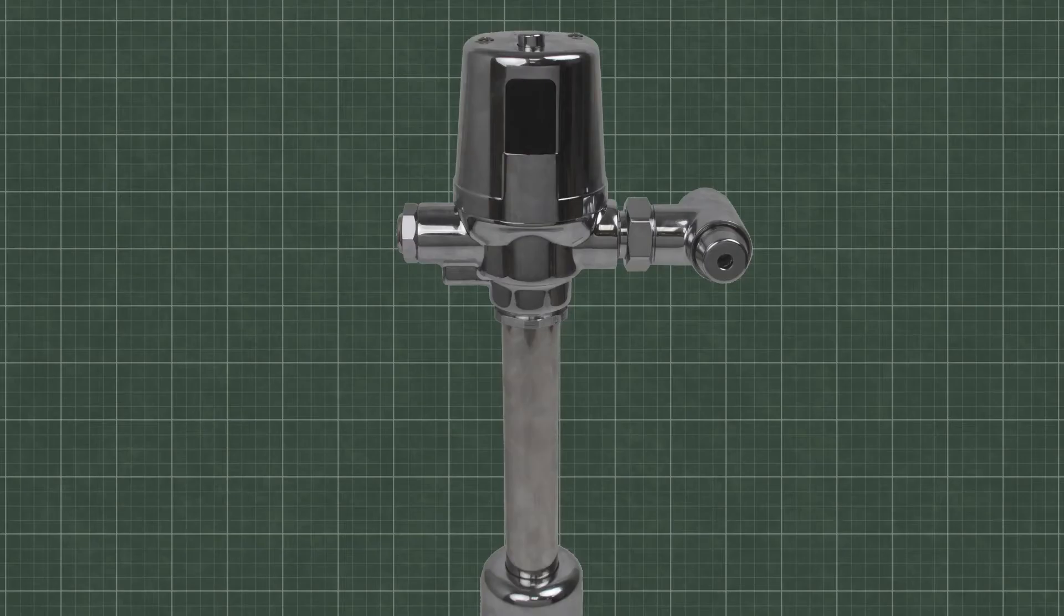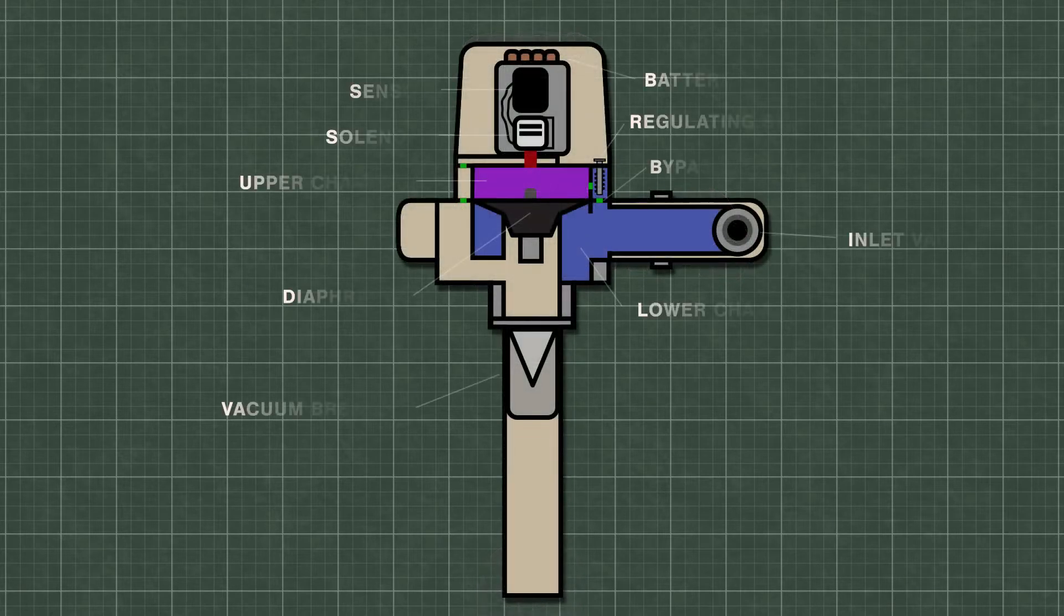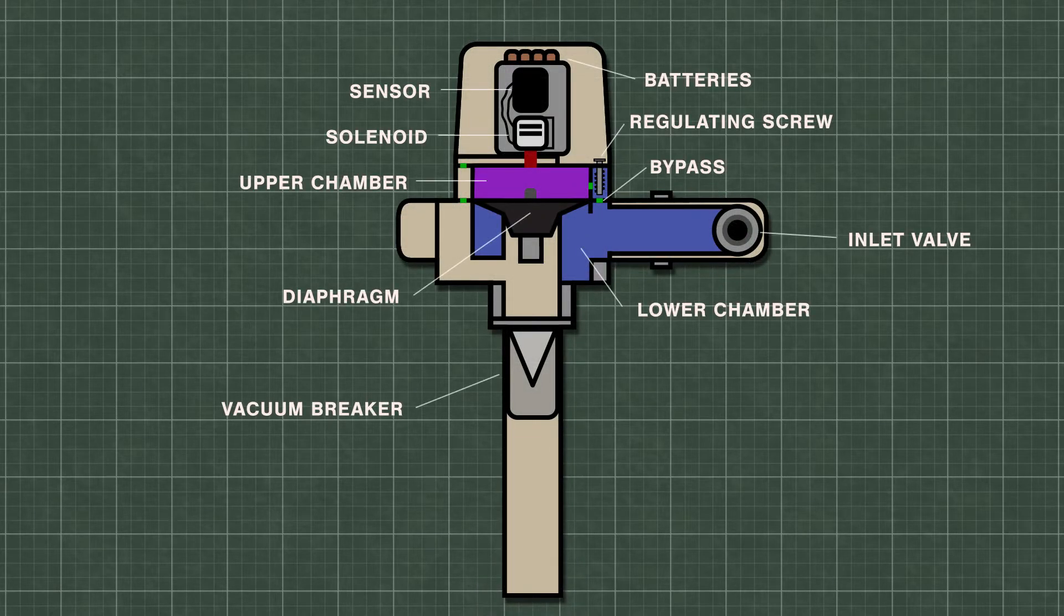In a Delta Tech 2, a flexible rubber diaphragm sits between the upper and lower chambers. At rest, high pressure water in the upper chamber keeps the diaphragm closed tightly on the valve seat.